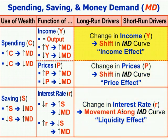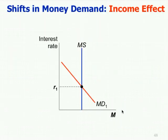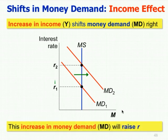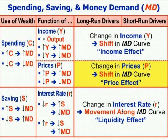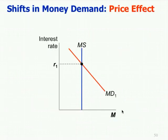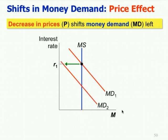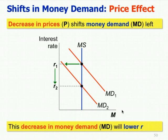Suppose we have a change in income — the income effect: an increase in income shifts money demand to the right. When you shift money demand to the right with money supply constant, that raises the interest rate. For the price effect, suppose we have a decrease in prices — everything is cheaper, so we need less money to buy the same goods and services. That shifts money demand to the left, which lowers the interest rate.